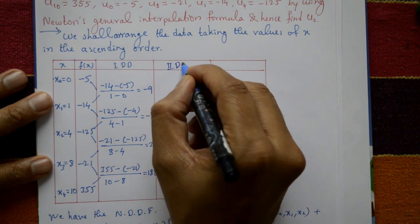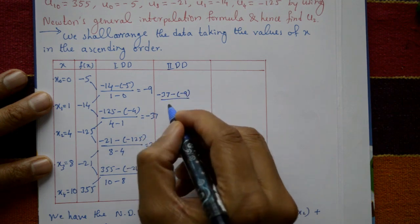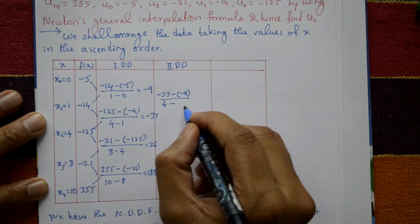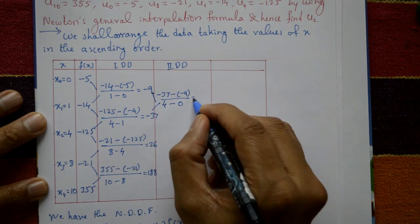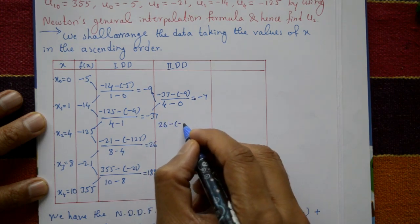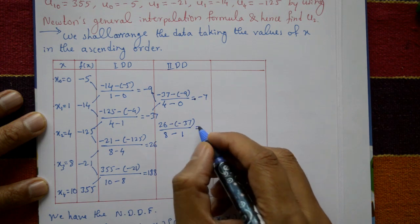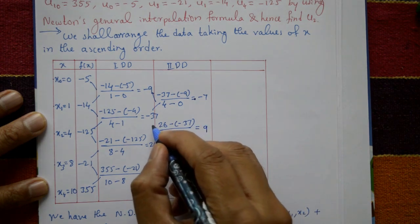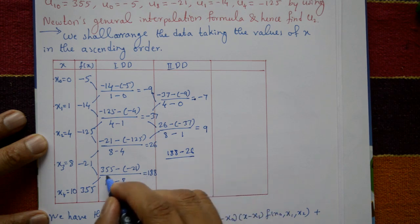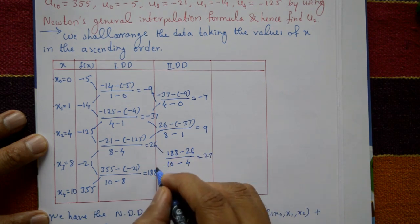Now the second divided differences. F[X0, X1, X2] = (-37 - (-9)) / (4 - 0) = -7. F[X1, X2, X3] = (26 - (-37)) / (8 - 1) = 9. F[X2, X3, X4] = (188 - 26) / (10 - 4) = 27.